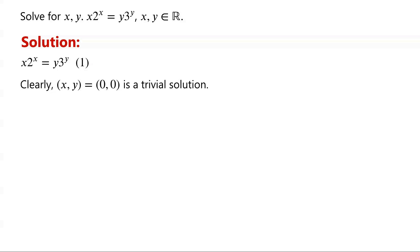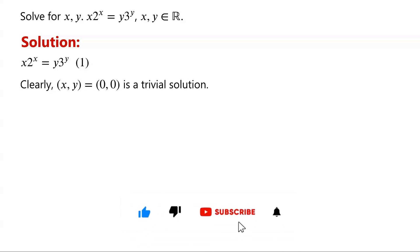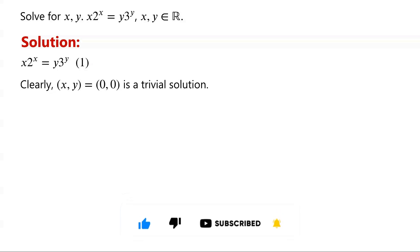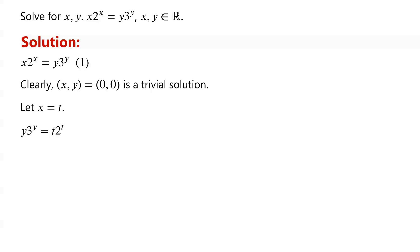Since each side of the equation has only one variable, finding a parametric solution by expressing variables x and y in terms of a parameter t might be easier. We let x equal t, where t is a real number. Then the equation becomes: y times 3 to the power of y equals t times 2 to the power of t.